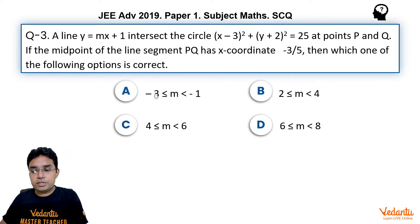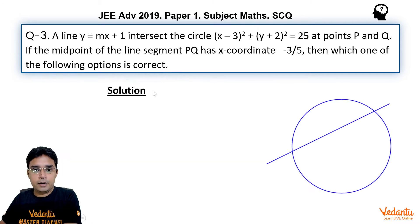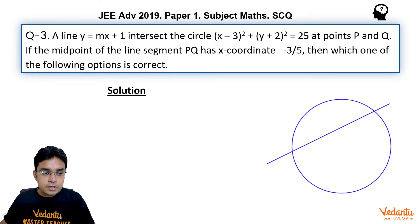Let us first solve this question then we will see what options are. Let us assume this is the circle and this line y equals mx plus 1 is intersecting the circle at P and Q, and the midpoint has x-coordinate minus 3 upon 5 and let us say y-coordinate is beta.